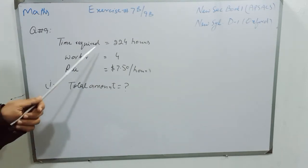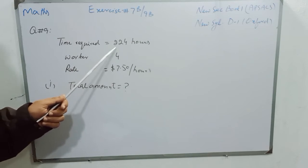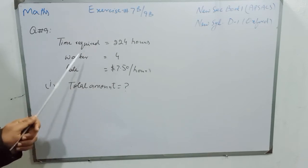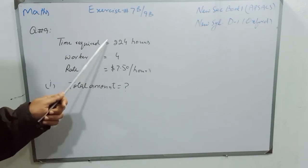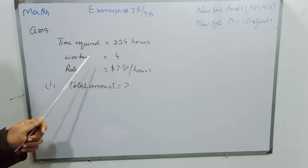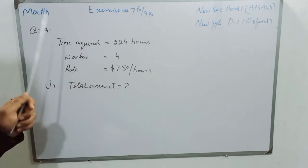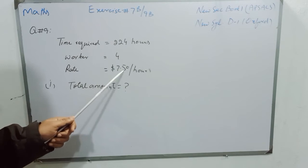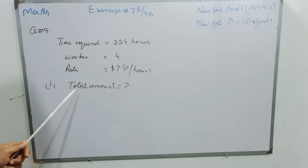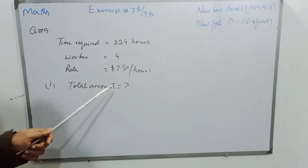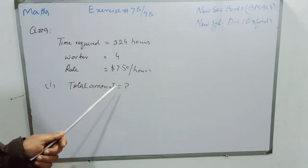There is a project that can be completed in 224 hours, and there are 4 workers who are working, and the rate of their wage is $7.50 per hour. We have to find the total amount for the project without overtime.